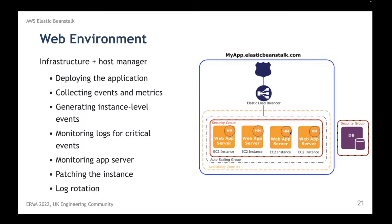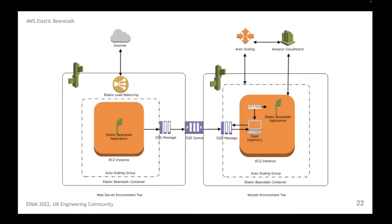For every environment I can choose between two environment tiers: web environment tier and worker environment tier. For every environment there is also a configuration. In the case of a web environment, we have a collection of EC2 instances all created by Elastic Beanstalk. On every instance we have a host manager — a daemon process responsible for deploying the application, collecting logs, monitoring the application, and performing service actions on our EC2 instances. In a web environment, the application will be available to end users.